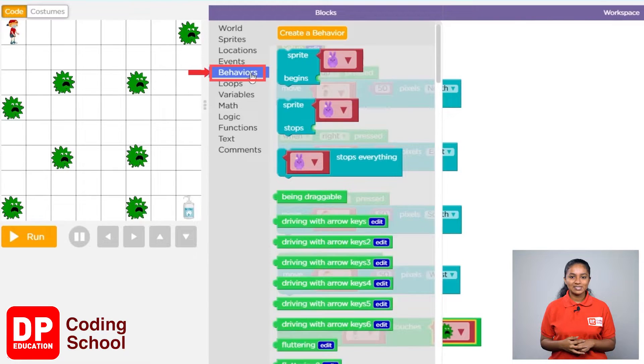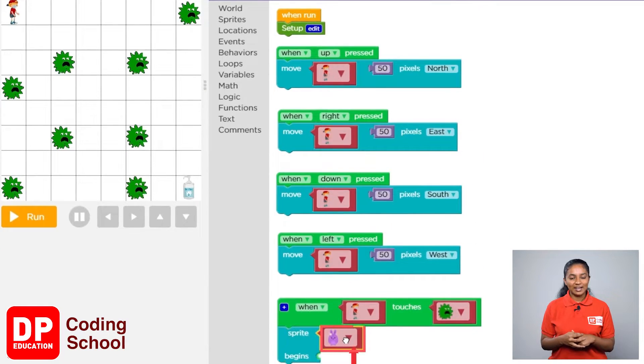I clicked on behaviors. Drag the sprite begins block like this. Click this arrow and select the child.